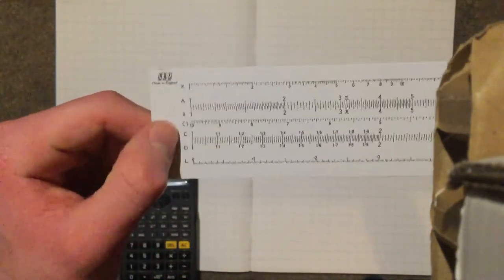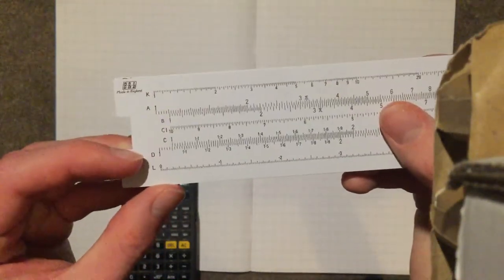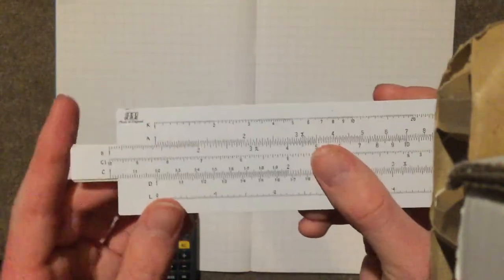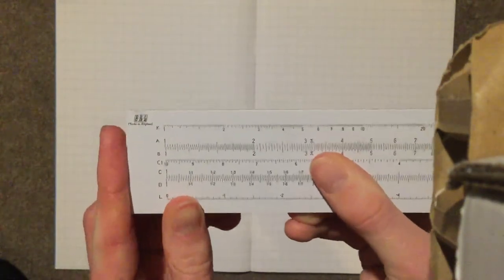You'll see that B, C, I and C are all on the moving portion, while K and A are above and C, D and L are below. Today we're going to focus on the C and D scales.